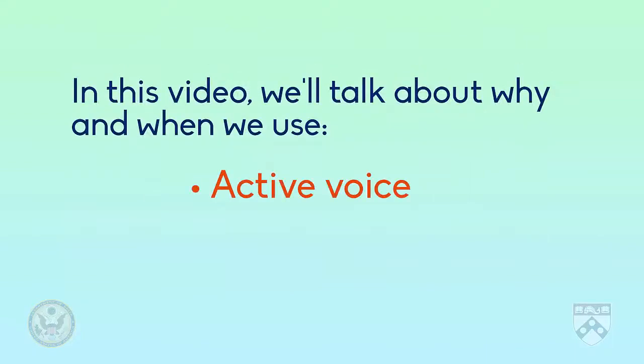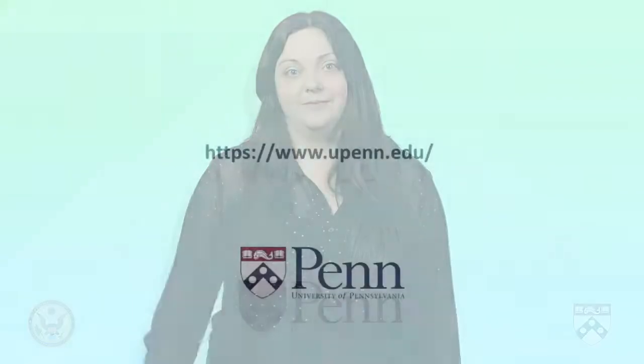In summary, active voice is many times the clearest way to give information, but if the action, or the person receiving that action, is the most important part of that sentence, journalists use passive voice. Check your understanding with a game. Up next, a video on writing accurately and concisely.